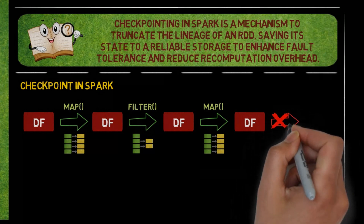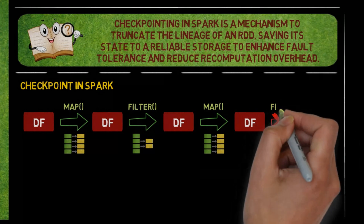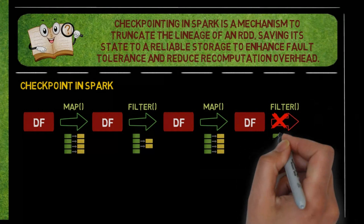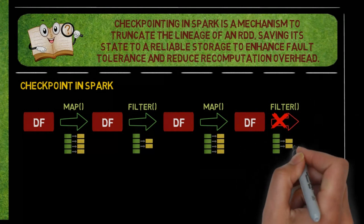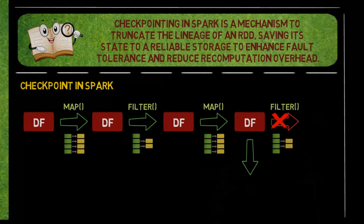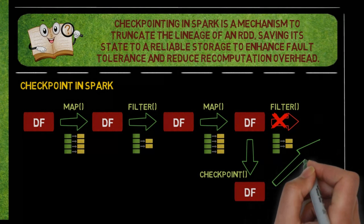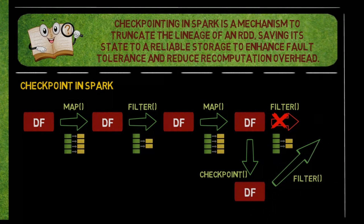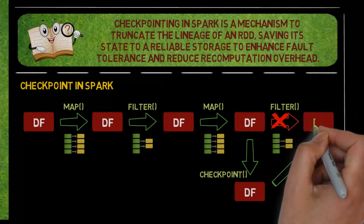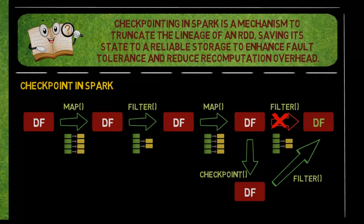In this example, if the final filter operation fails, Spark recomputes all the transformations from the beginning. However, if a checkpoint had been applied to the output of the map function, Spark would use the checkpoint data to recompute only the subsequent steps, rather than re-executing the entire lineage from the start.